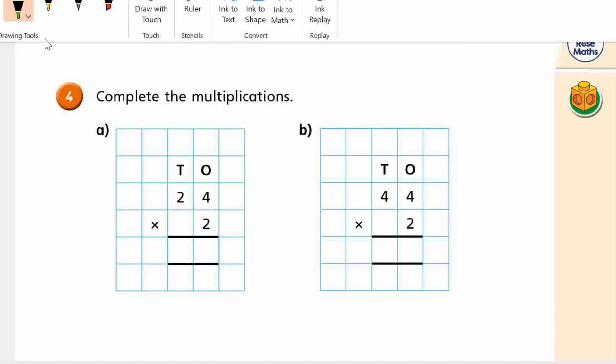Complete multiplications. 2 times 4. What is that? Yep, 8. And 2 times 2. 4. Good. 2 times 4. And 2 times 4. 8 again. Okay? So you can see this makes things a bit easier.